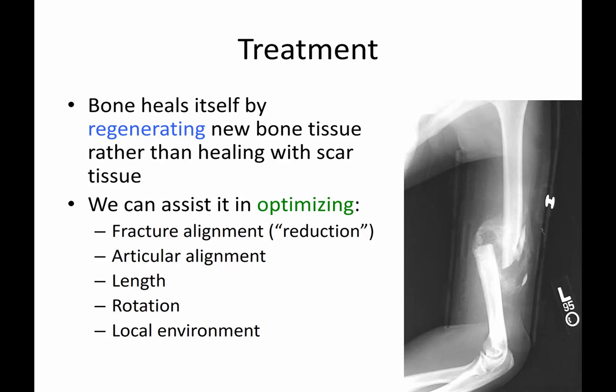When a fracture occurs, bone heals by regenerating new bone tissue and eventually remodels it over time to restore mechanical integrity. Sometimes when it doesn't heal, it only forms fibrous tissue — but we'll get to that in another portion of this lecture.